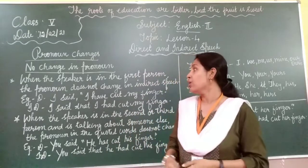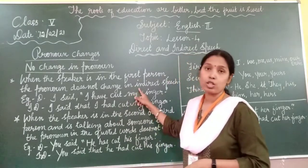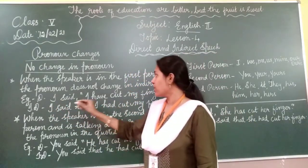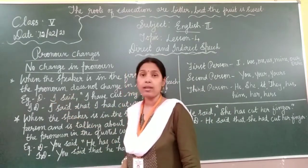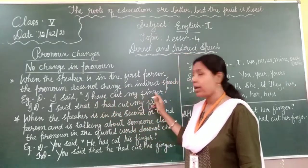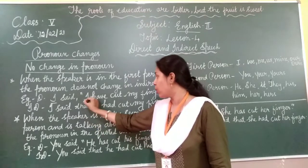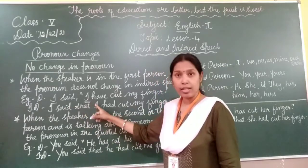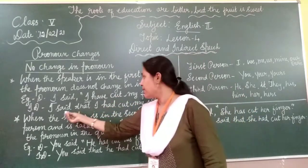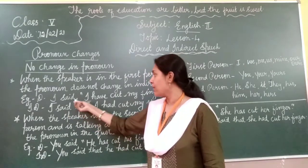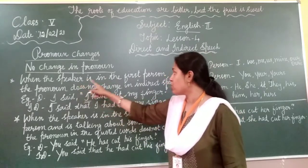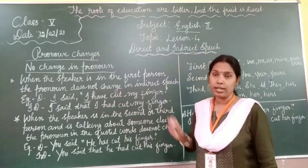Children, we have already learnt this. So, when the speaker is in the first person, then the pronoun does not change in indirect speech. See the example: 'I said, I have cut my finger.' Here, who is the speaker? The speaker is in first person — 'I'. When the speaker is in the first person, the pronoun does not change in indirect speech. So, 'I said that I had cut my finger.' Only 'have' changed to 'had'; the pronoun itself stays the same. You have to use the conjunction 'that' after the reporting verb.